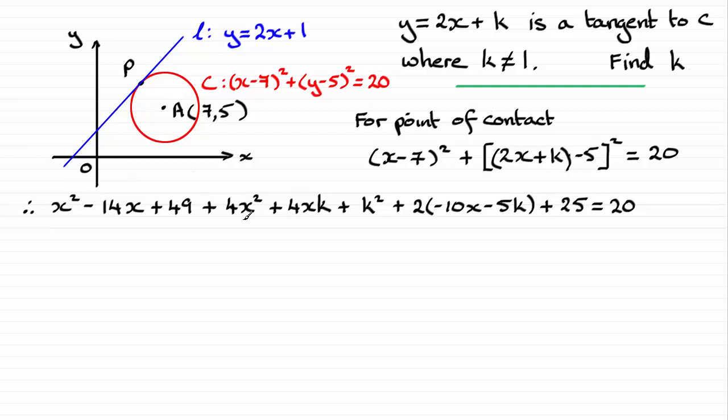Okay, so do check that out. Then I've just grouped together all the terms, and if you group together the x squared terms, the x terms, and then the constants, you should find you get this line here.